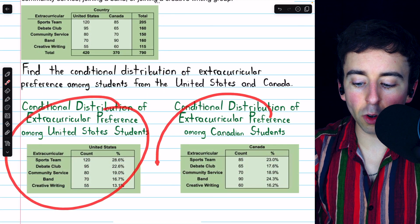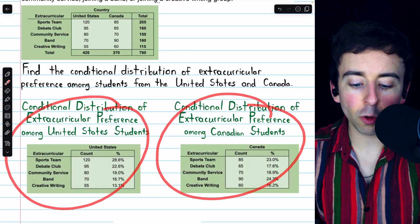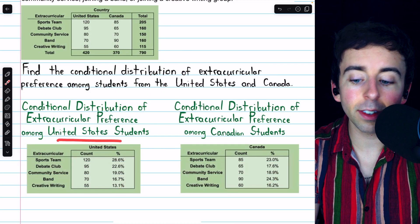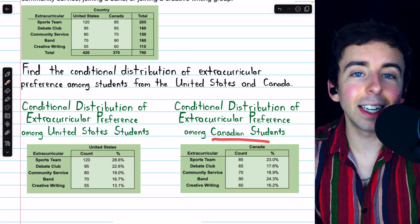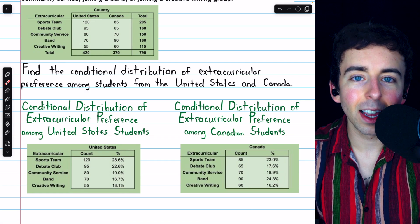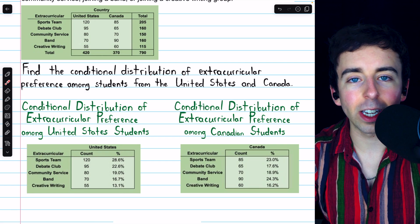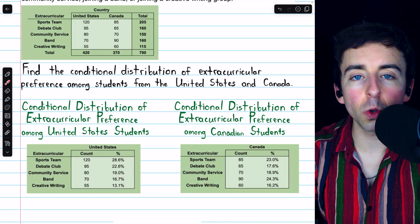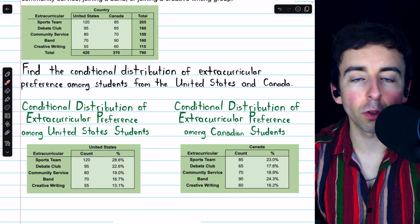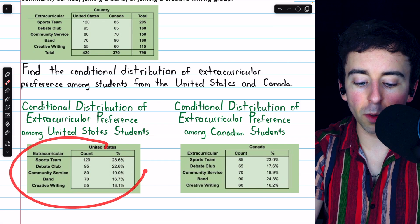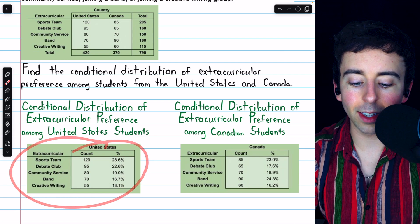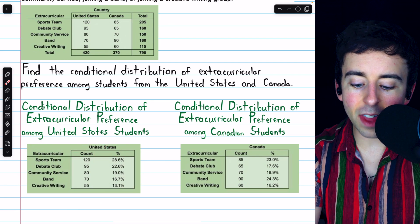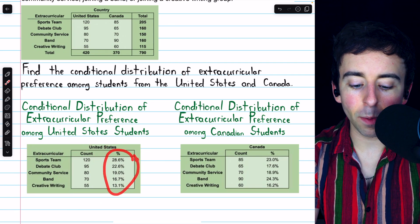These are the conditional distributions of extracurricular preference among United States students and separately among Canadian students. Again, since the country of origin has two possible values, there are two conditional distributions. Here in the conditional distribution for the United States students, we see those raw counts and then we see the percentages.